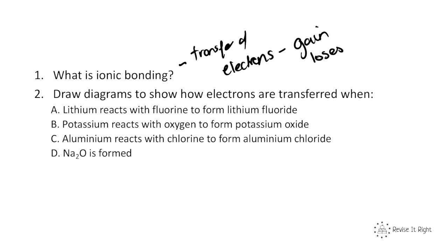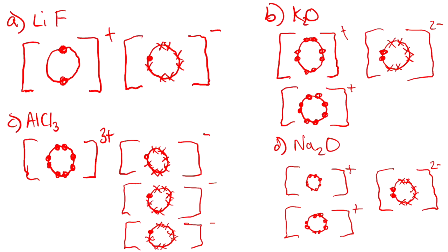Question two: draw diagrams to show how electrons are transferred. For lithium fluoride, you should have drawn lithium with 2 electrons in its outer shell and a + charge, and fluorine with 8 electrons in its outer shell — one of those coming from lithium — giving it a − charge.